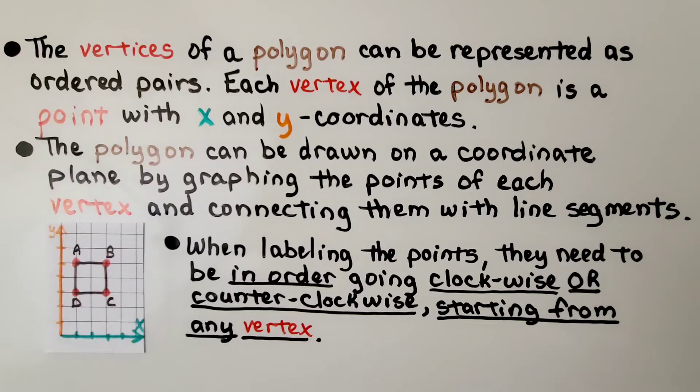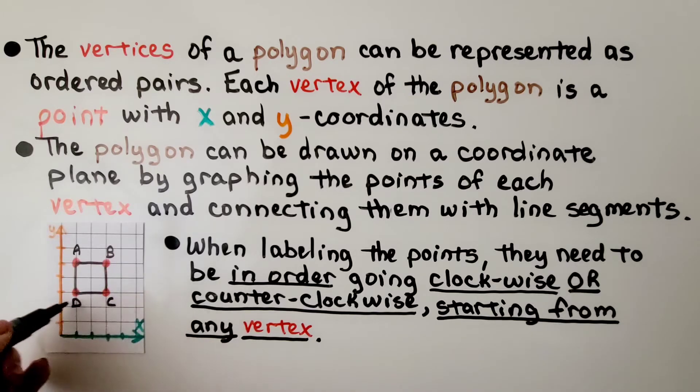When labeling the points, they need to be in order, going clockwise or counterclockwise, starting from any vertex. So for this one, it started here and we went A, B, C, D.